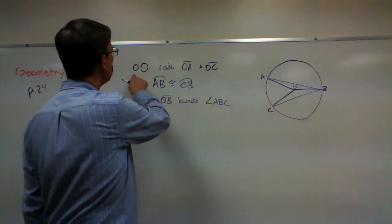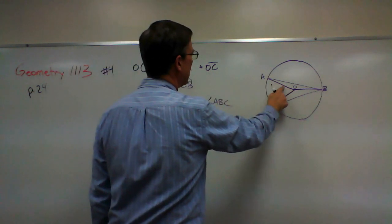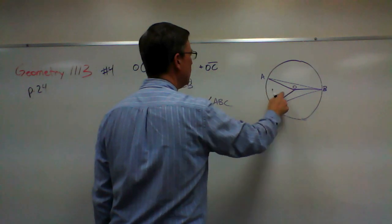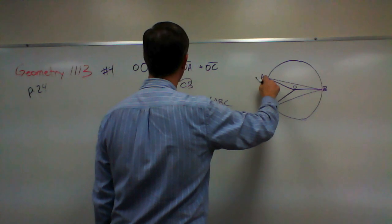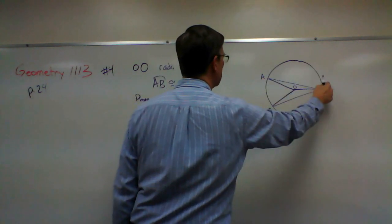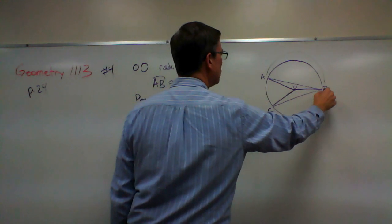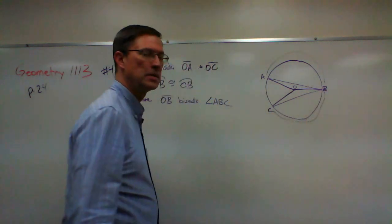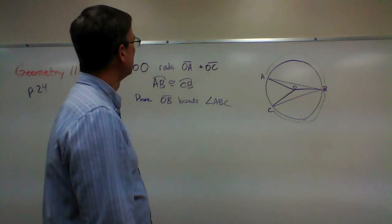Let's see what's given. Circle, radii OA. So we have OA here. We have OC. And we also know that arc AB, so this arc here is congruent to this arc CB.